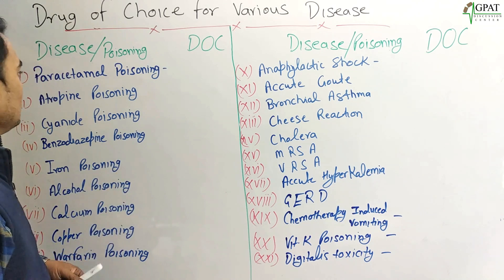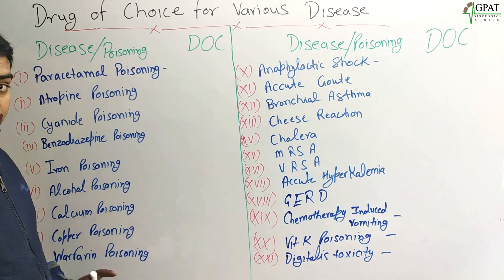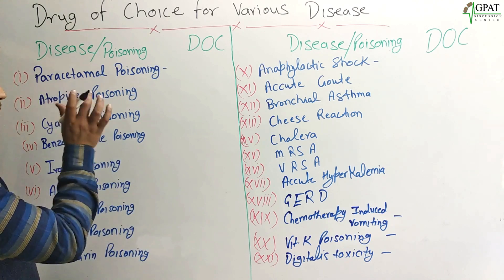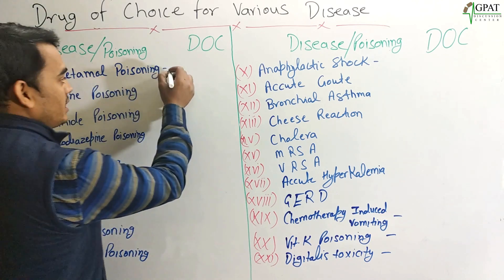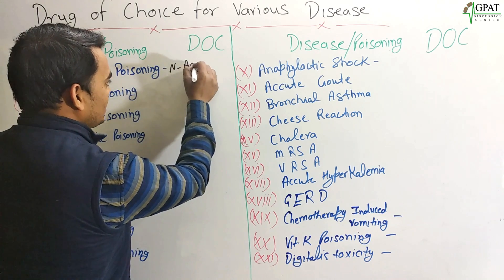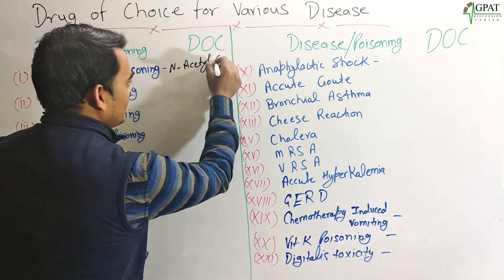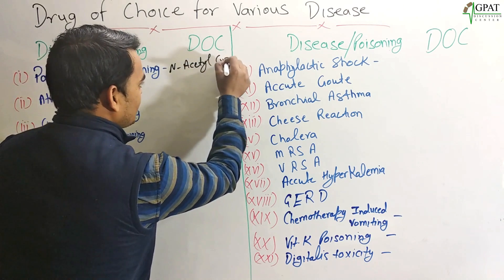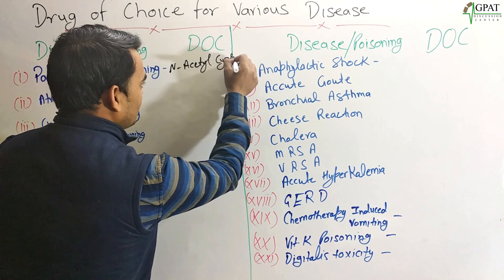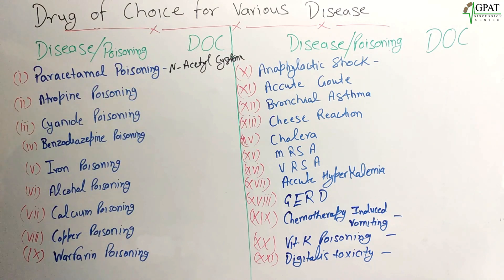So first: Paracetamol poisoning. The drug of choice for paracetamol poisoning is N-Acetylcysteine. This is the drug of choice for paracetamol poisoning. Next: atropine poisoning.